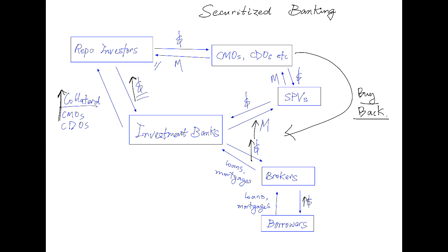Because investment banks benefit from all these transactions — each time they go through a cycle they collect more fees — they become even more profitable. Investment banks profit from all these fees and make huge profits, and this is exactly what happened pre-GFC.